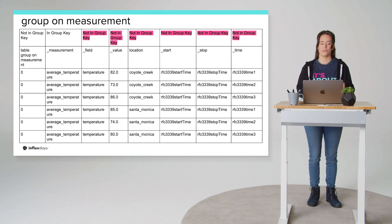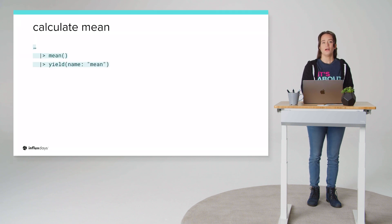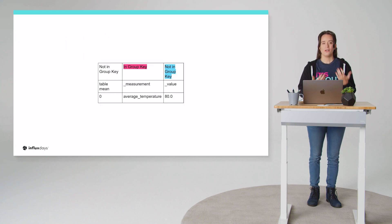And then once we apply that group, we're saying only group on the measurement column. So now that will be the only thing that's part of the group key, and all the other columns are no longer part of the group key. And now that we have all of our results in one table, now if we pipe forward that table into another function like the mean function, we can actually get our result. So the last thing we have to tack on are these two final lines. We add the mean function, and then we're also going to name that result mean just so we can distinguish all the different yield functions. And here's our final result.